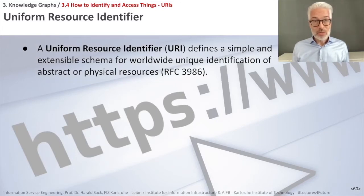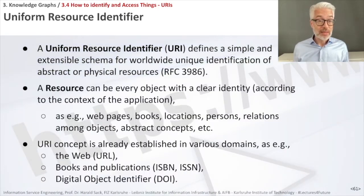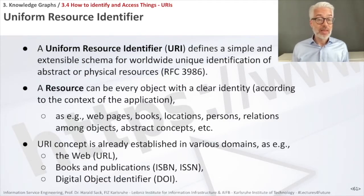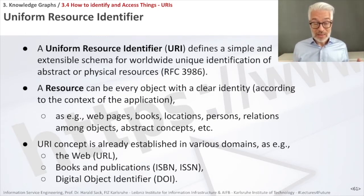The way we identify whatever is on the web are the so-called Uniform Resource Identifiers. A Uniform Resource Identifier, URI, defines a simple and extensible schema for worldwide unique identification of abstract or physical resources. A resource can be every object with a clear identity according to the context of the application — a web page, a real-life book, a location, a place, a specific person, relations among objects, or something abstract. You can denote it with a simple reference, and this is the URI.